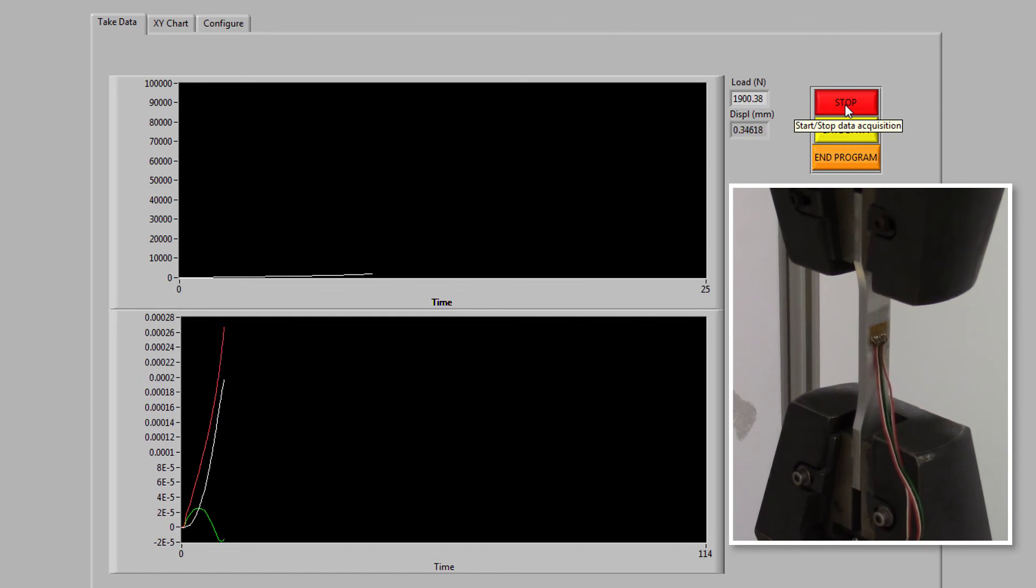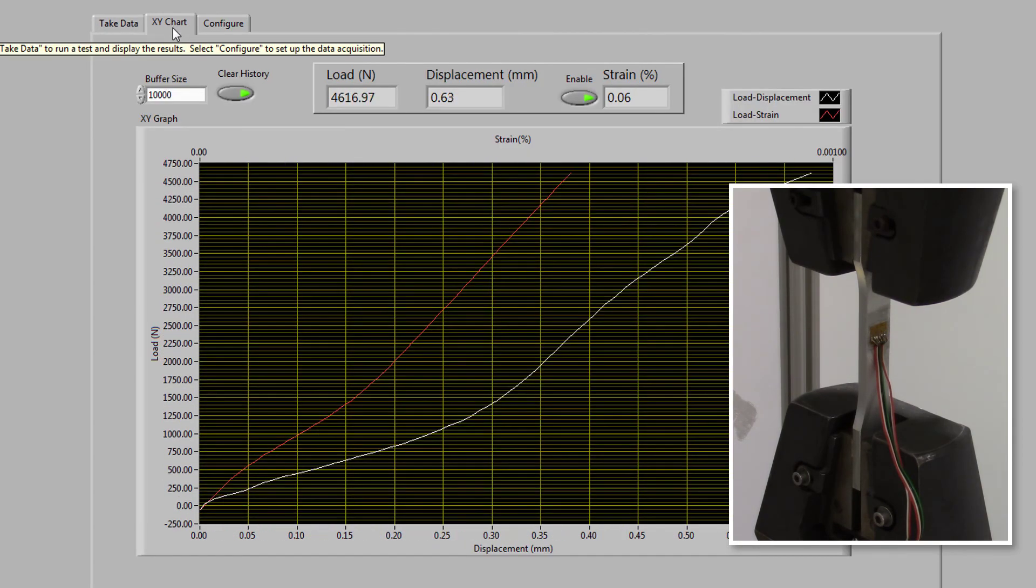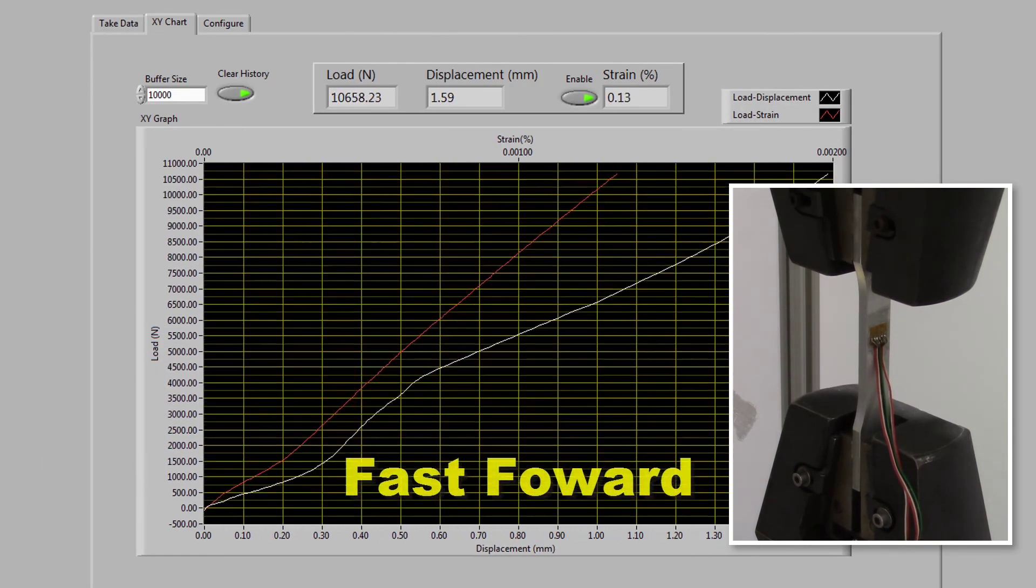Click on the tab labeled XY chart for a better visual. Load versus Displacement is plotted in white, load versus strain in red. Let's fast forward a bit.